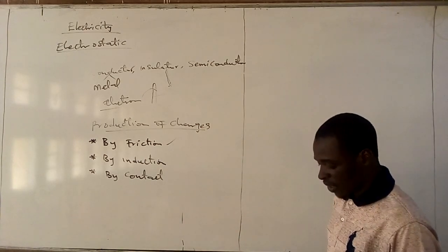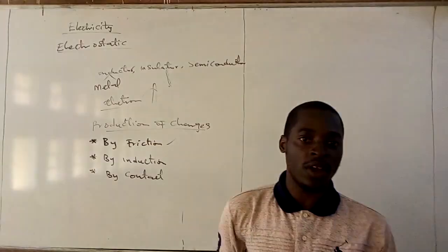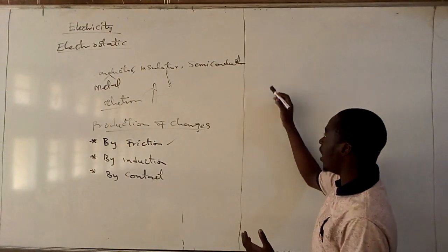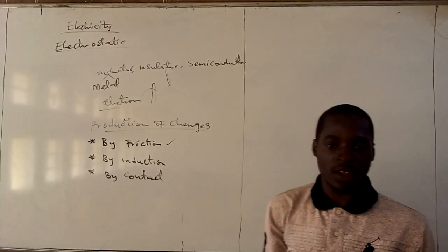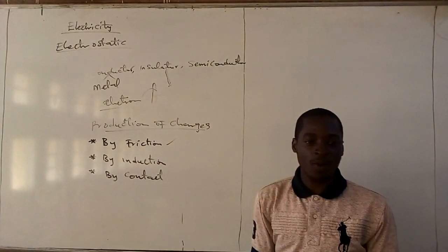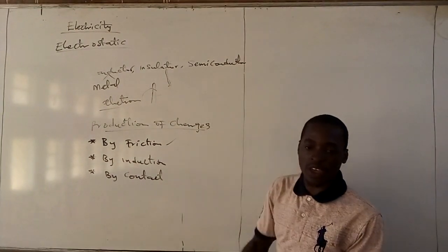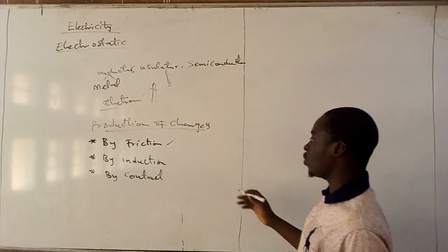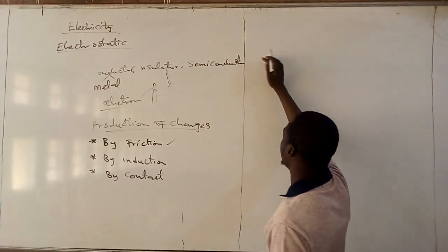We can also produce electric charge due to induction. Induction means we have two rods and we bring them near to each other. Since the two rods are not in contact with each other, the rod that has the charges will induce a charge into the other rod, which will then affect each other, transferring electrons.